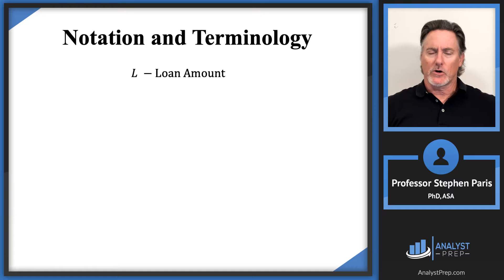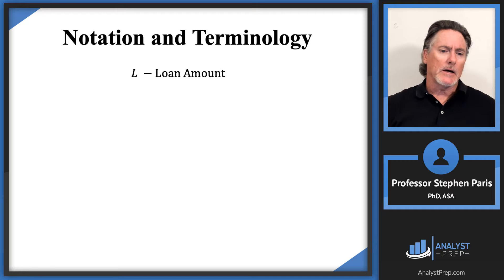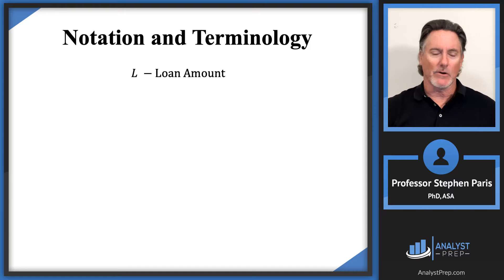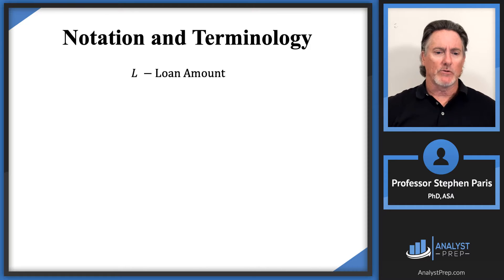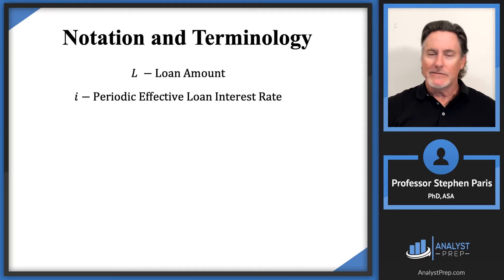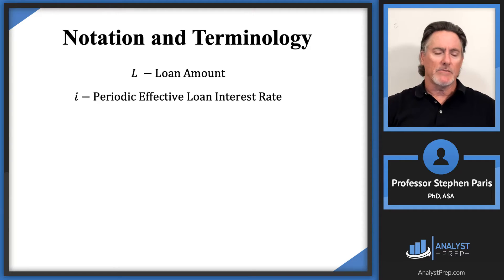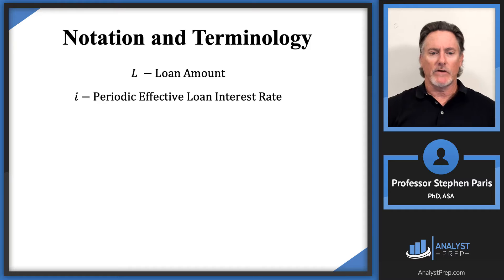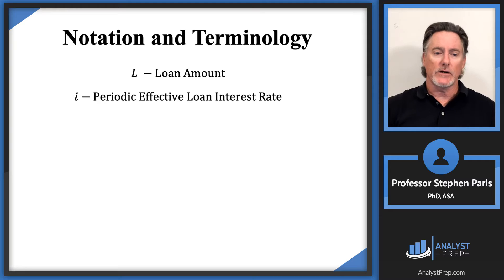Let's get into some loan notation and terminology. I'm going to use a capital L — I'll often say 'cap L' — to represent the loan amount. The letter i will be the periodic effective interest rate. These loans have periodic payments, maybe monthly, so i would be the monthly effective interest rate. If payments were annual, i would be the annual effective interest rate. Generally, capital letters represent amounts and lowercase letters represent interest rates or time periods.